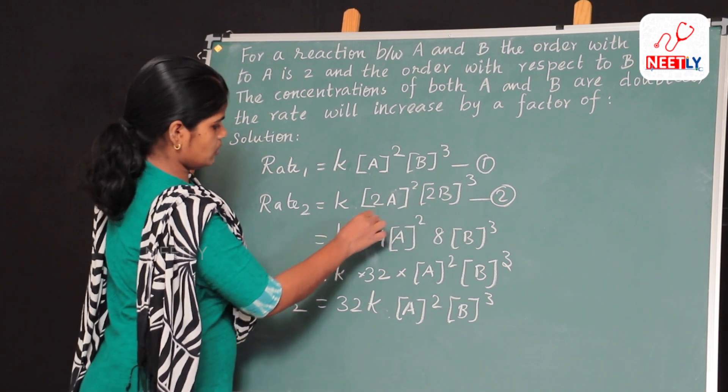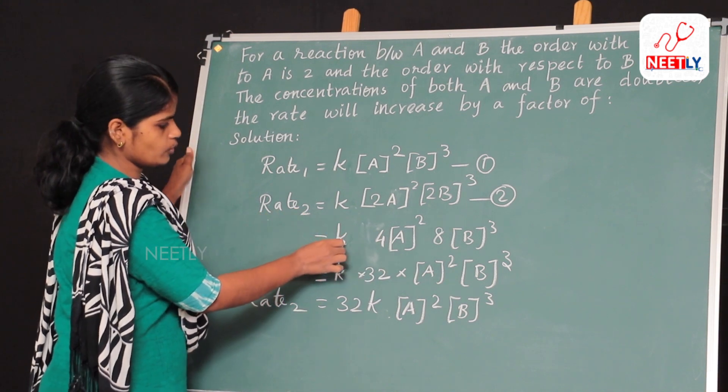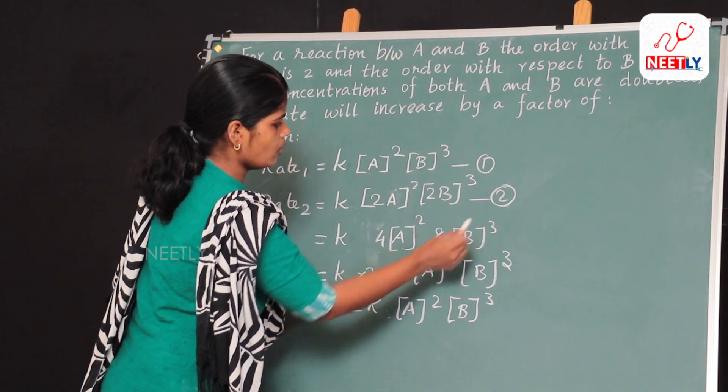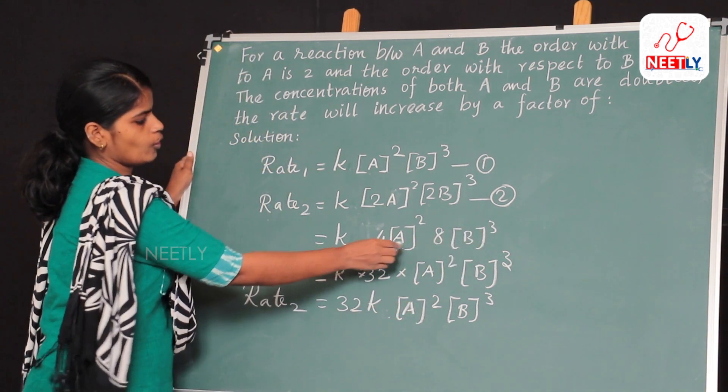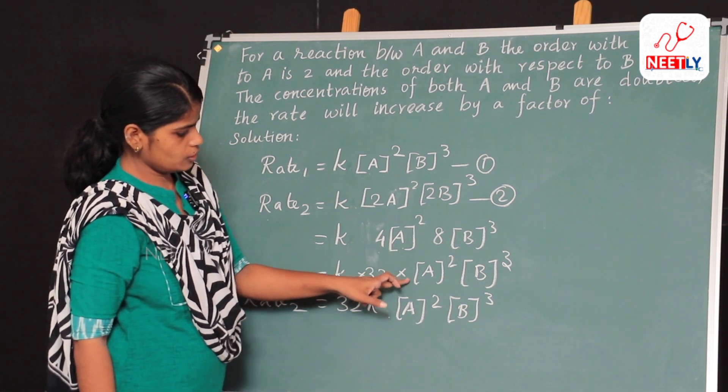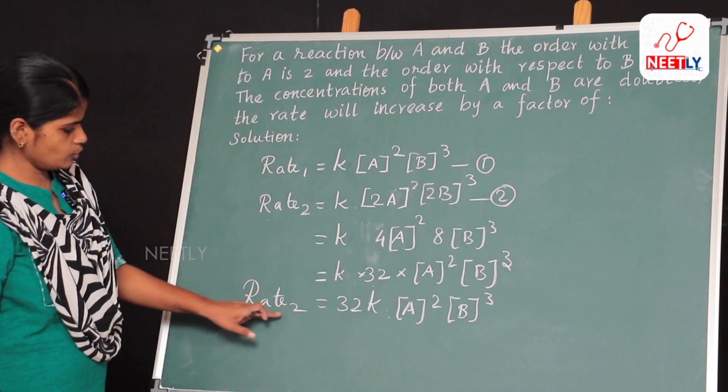And then rate 2 is equal to K times 4A squared times 8B cubed, and then 4 times 8 is 32. So K times 32 times A squared and B cubed, and rate 2 will be.